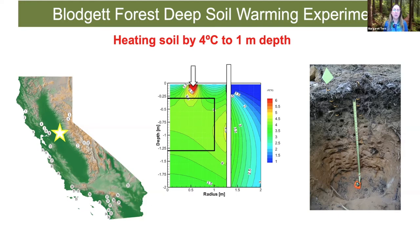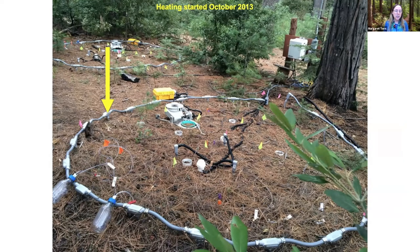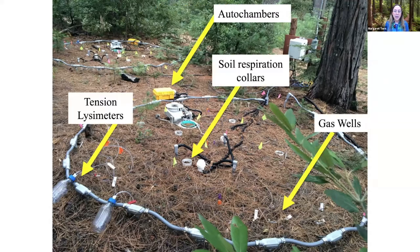Here's a picture of a research plot. There are 22 vertical heaters surrounding each plot, which are three meters in diameter. We have six plots total. We also have shallow cables near the center to help warm the surface, since we lose heat more quickly there. We're measuring all different aspects of the carbon cycle: CO2 efflux to the atmosphere, tensioned lysimeters to measure dissolved organic carbon movement, gas wells, and small samples to monitor CO2 production at depth.